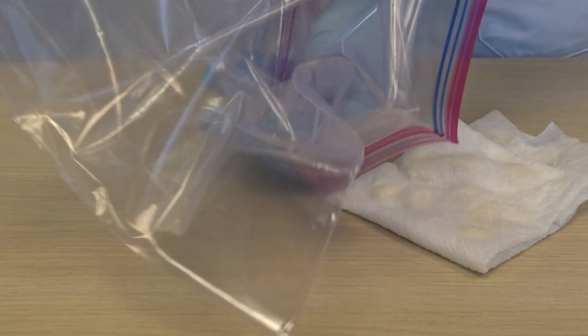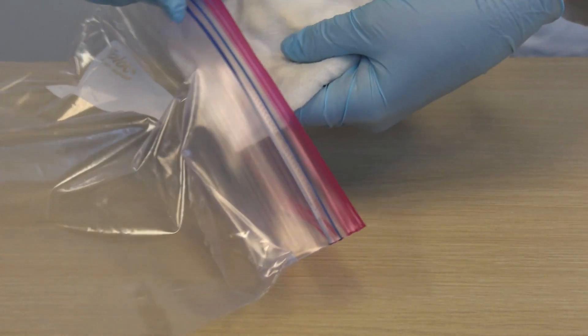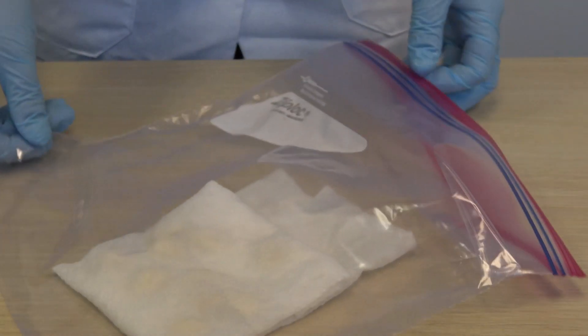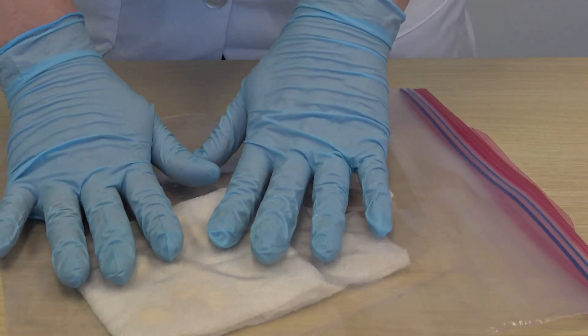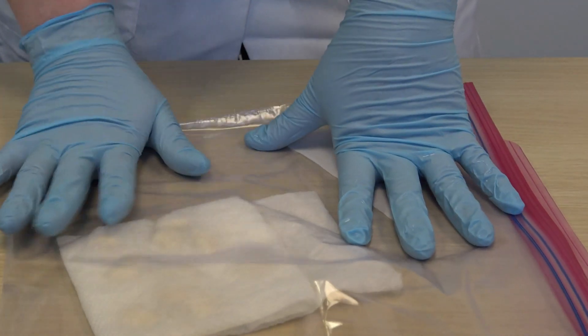Next, take a zip-top bag and place your bean seeds in the damp paper towel inside the bag. If you have multiple paper towels for each student group, you can stick them all in the same bag or in a couple of bags.